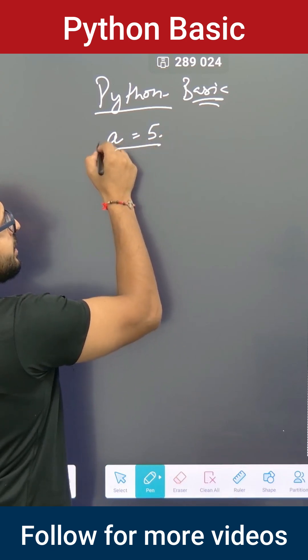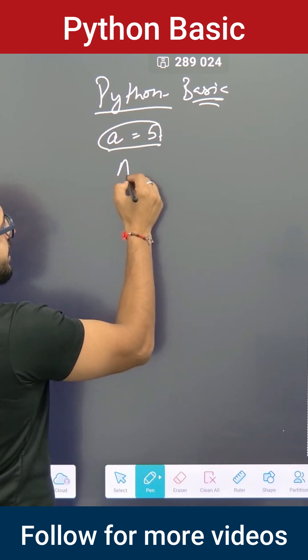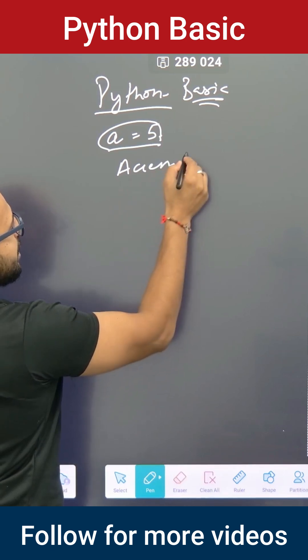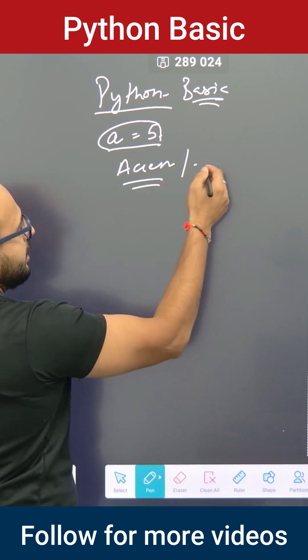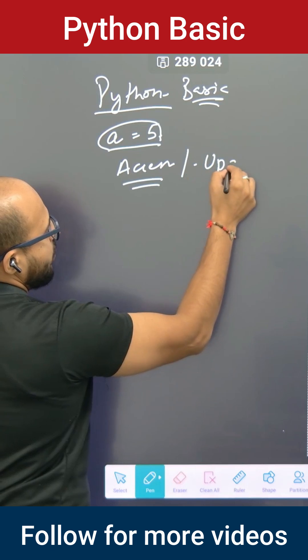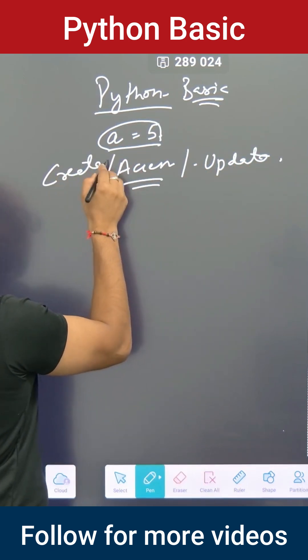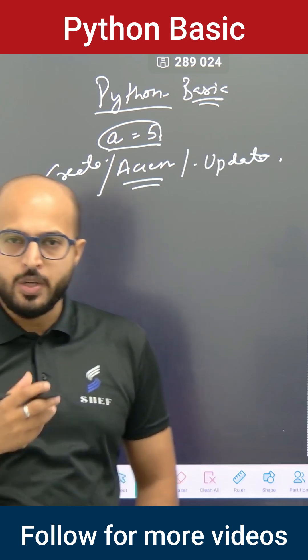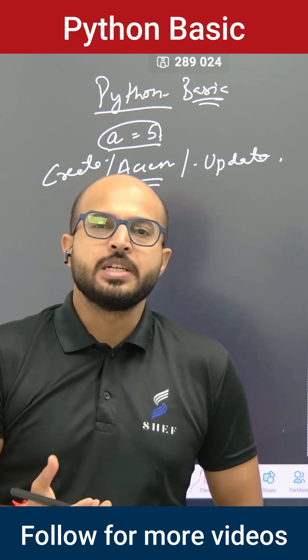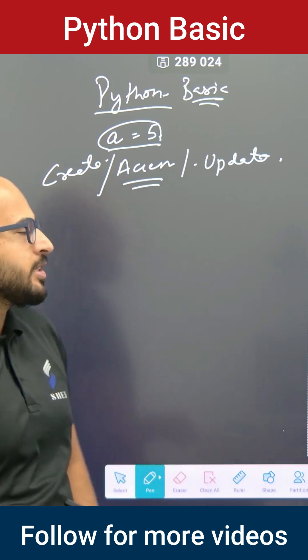That is called initialization. After that, you have to access this. And in the end, suppose I wanted to update it. So first of all, it's like variable creation - you're creating a variable, then you are accessing it, and then you are updating it. It's a general three-step process that you need to follow.